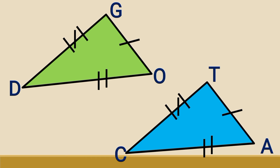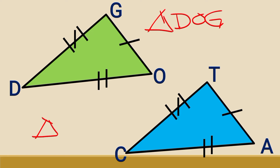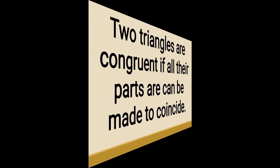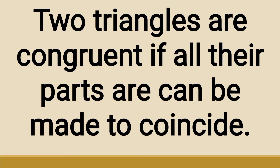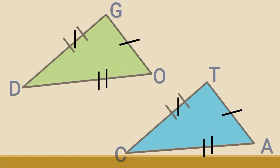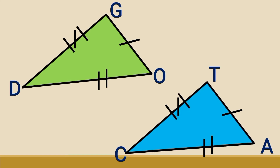We have this example with two triangles: triangle DOG and triangle CAT. Remember that when two figures are congruent, you may slide, flip, or rotate the figures until they overlap exactly. Two triangles are congruent if all their parts can be made to coincide. As you can see, there are markings on the sides of each triangle.